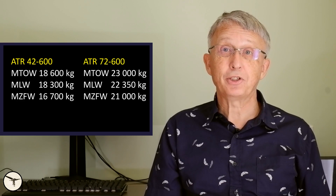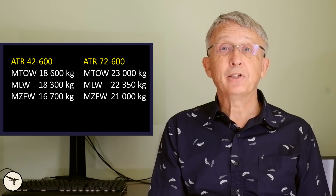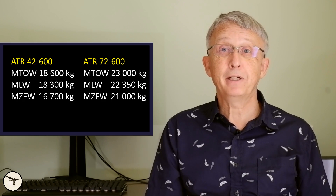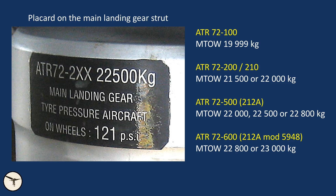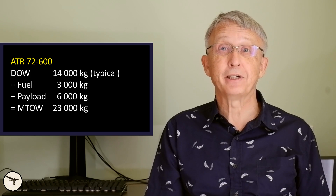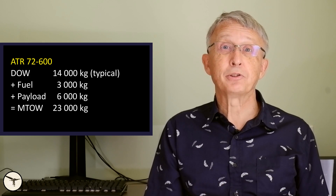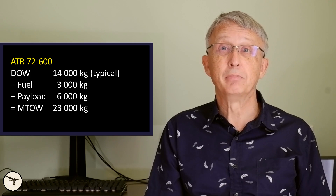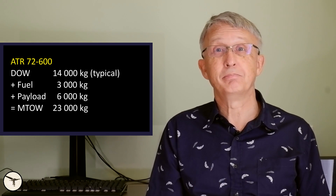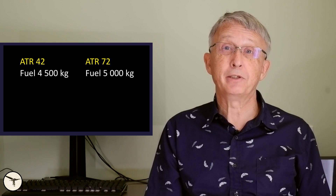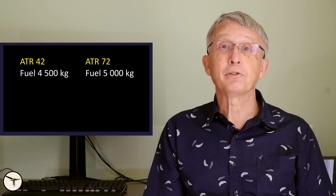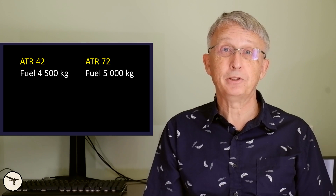Here are the weight limitations. The ATR can be delivered with different max takeoff weight depending on the variant of the landing gear. The 72-600 has a max takeoff weight of up to 23 tons, making it very versatile. You can take 3 tons of fuel and 6 tons payload and fly for 4 hours, give or take. Maximum fuel capacity is 5,000 kilos for ATR 72 and 4,500 kilos for ATR 42.